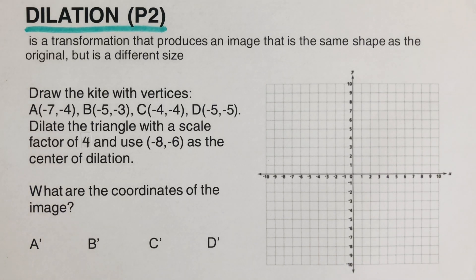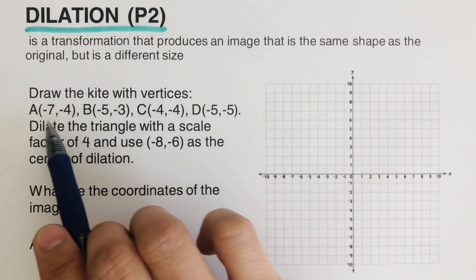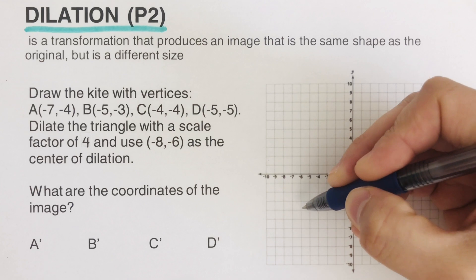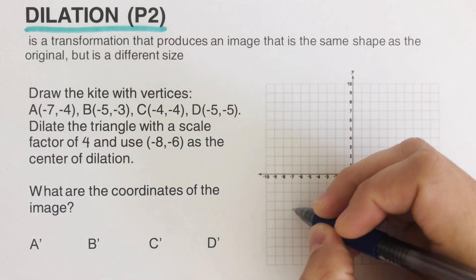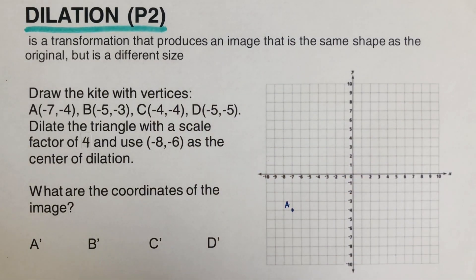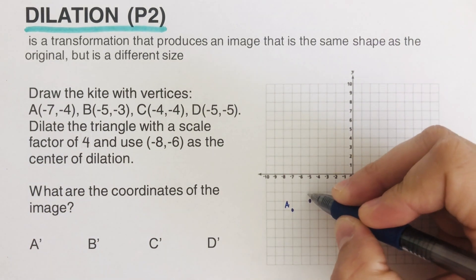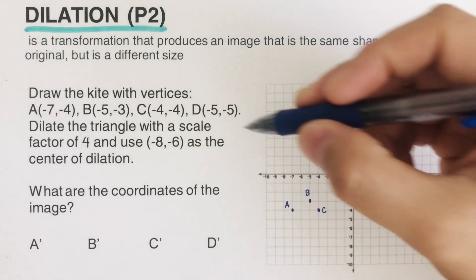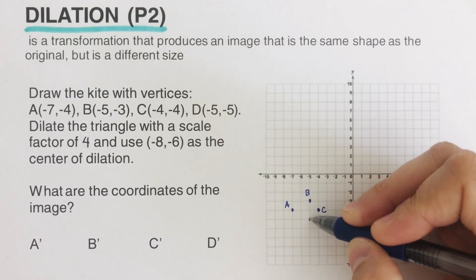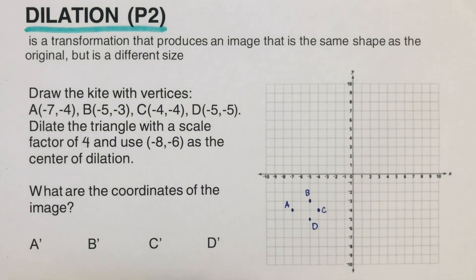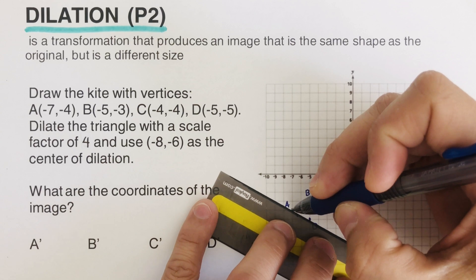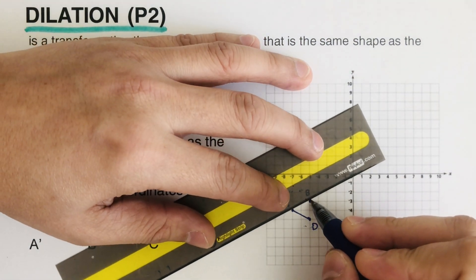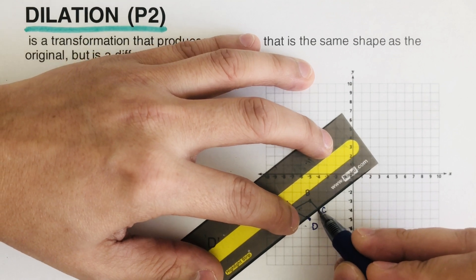We have a problem that says to draw a kite with vertices A, B, C, and D. Point A is at negative seven, negative four — we'll label that as A. Point B is at negative five, negative three — labeled B. Point C is at negative four, negative four — labeled C. Point D is at negative five, negative five — labeled D. We then connect the dots to create the kite.